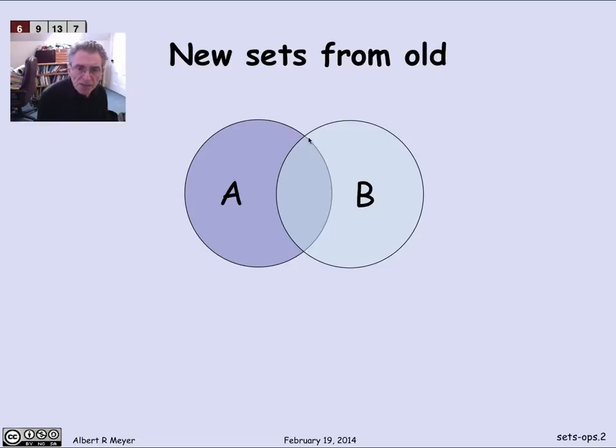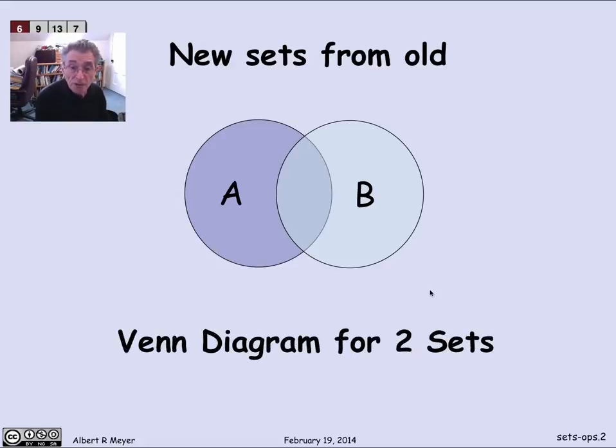The overlapping area, this lens-shaped region, are the points that are in both A and B. And the background are the points that are in neither A nor B. So this general picture allows you to classify points with respect to A and B. And it's called a Venn diagram, in this case for two sets.